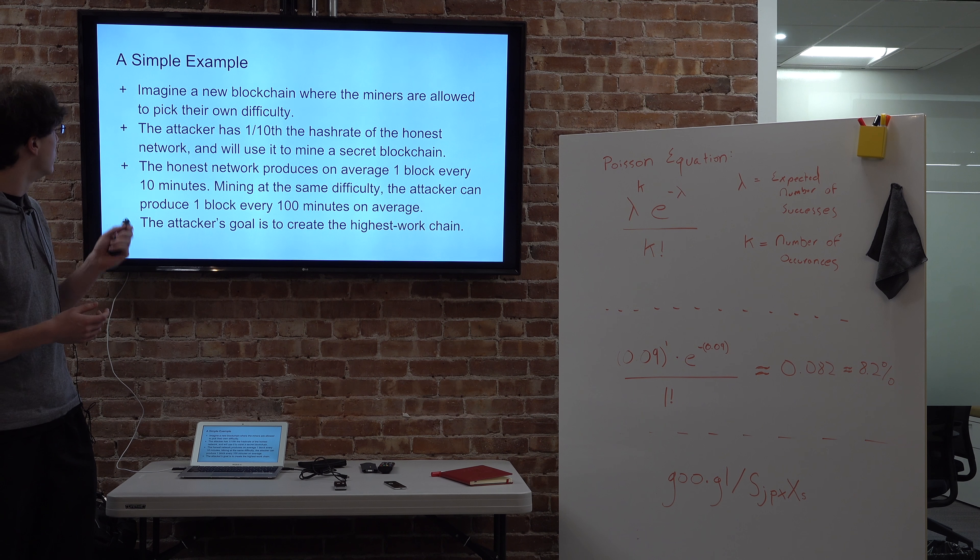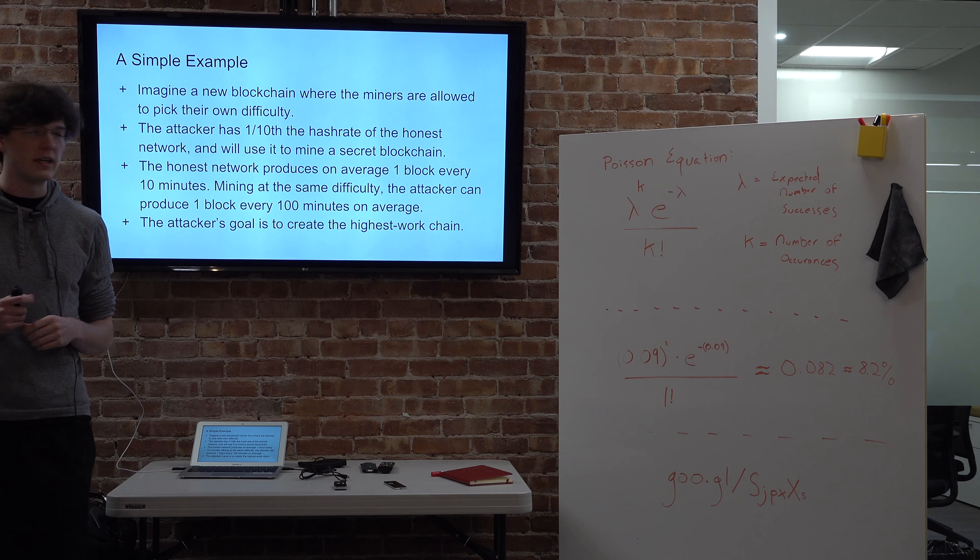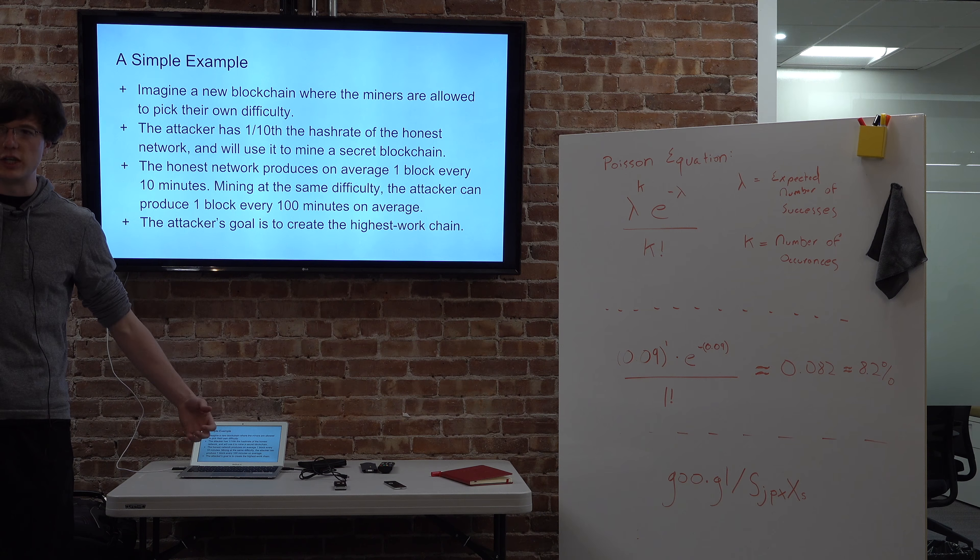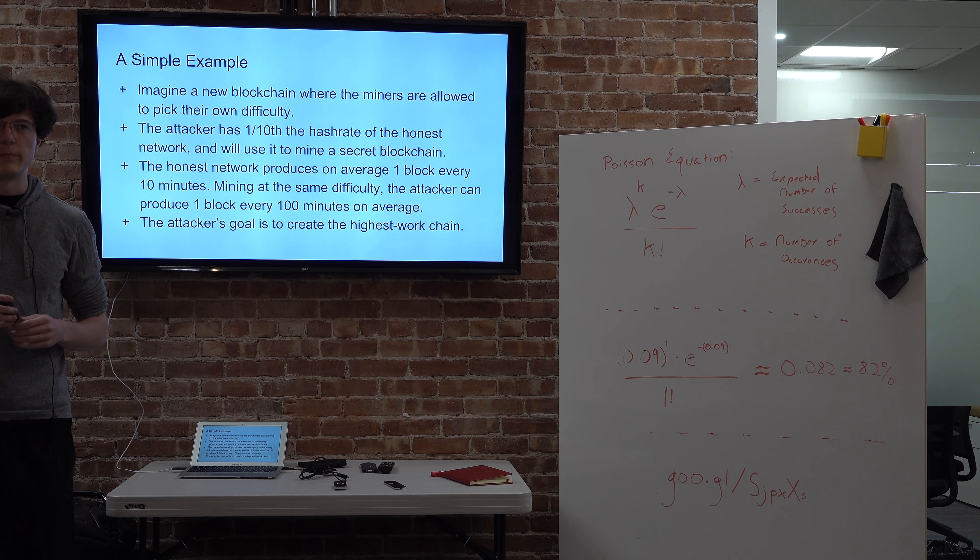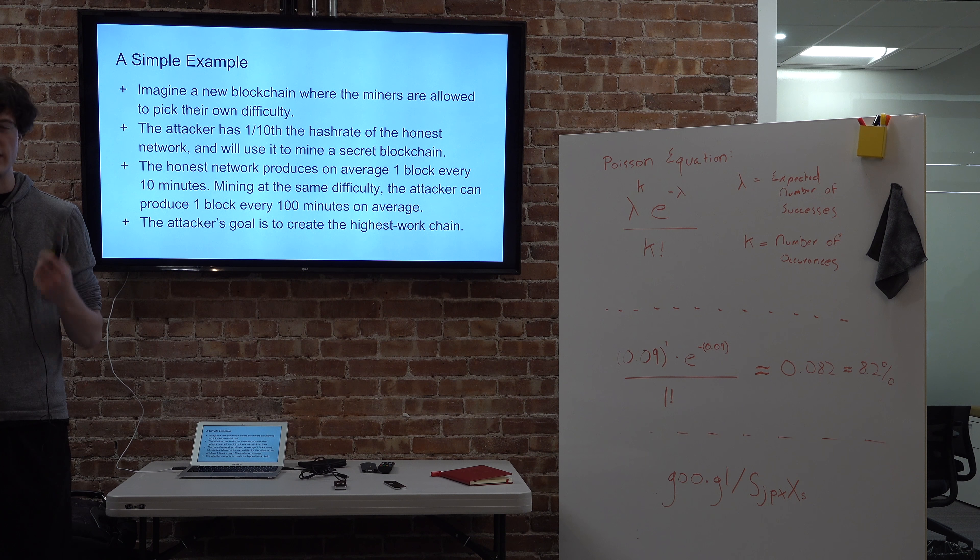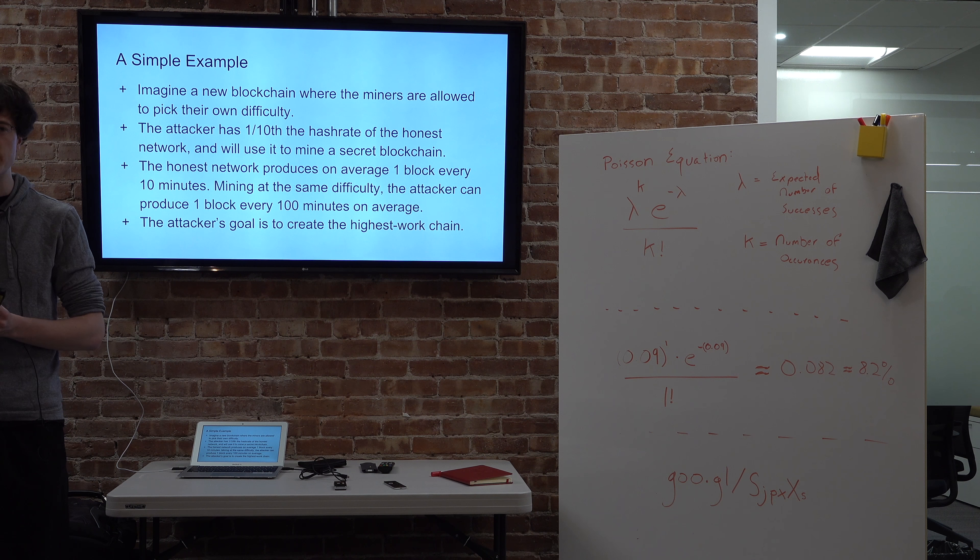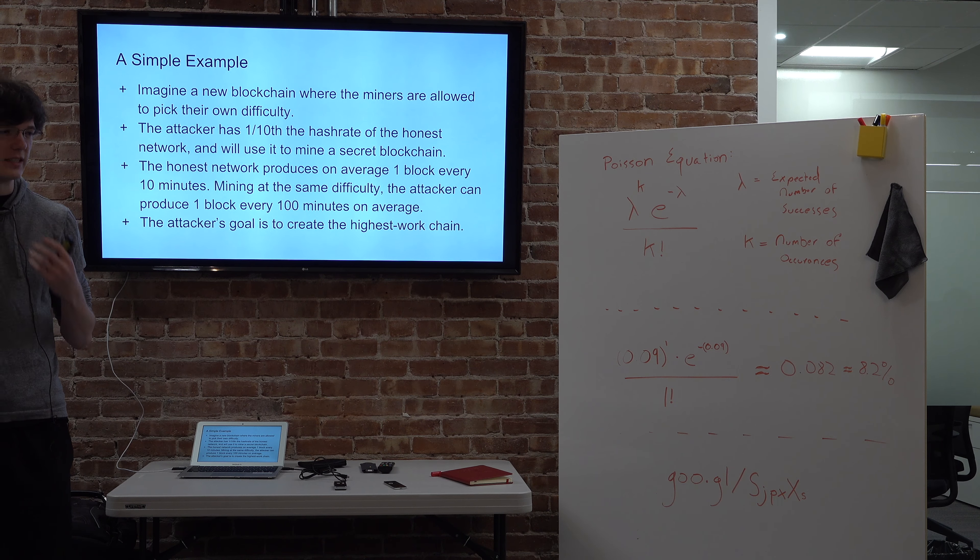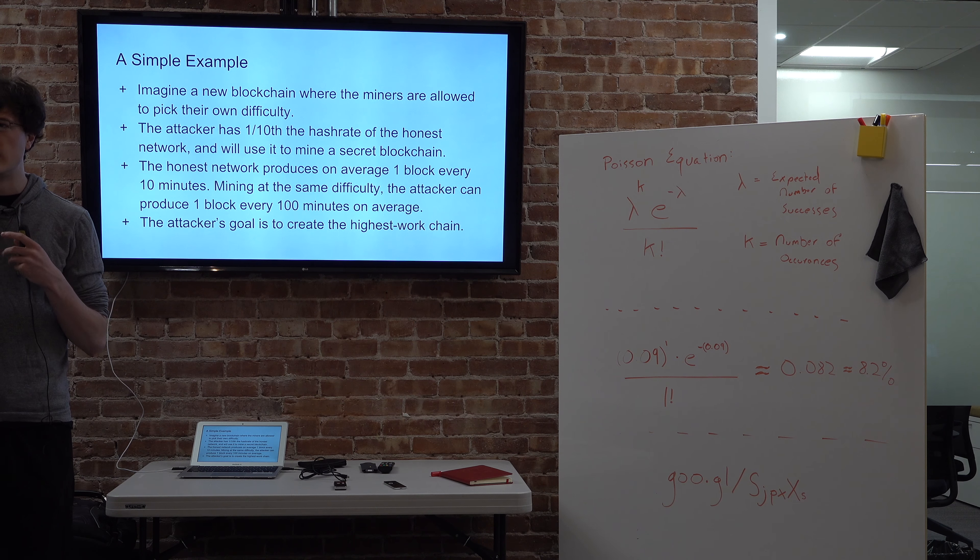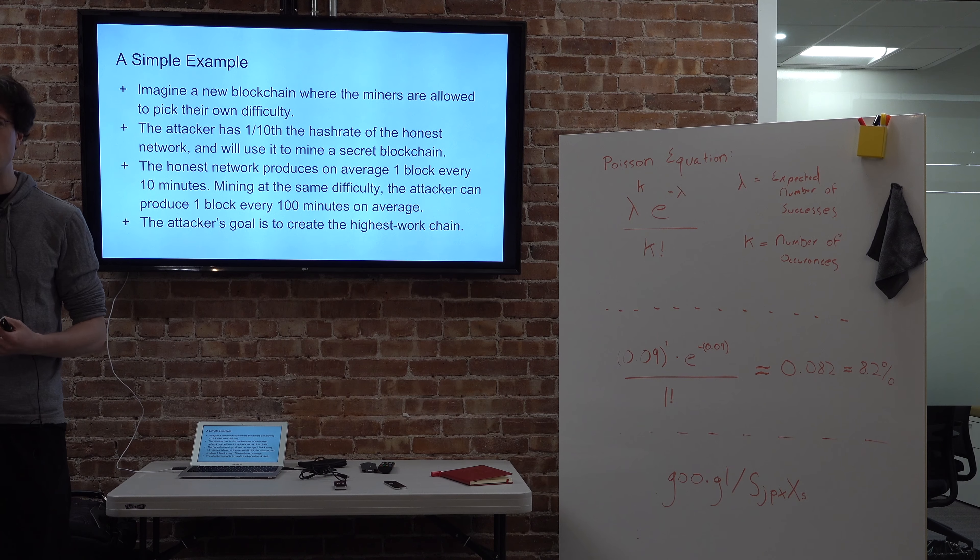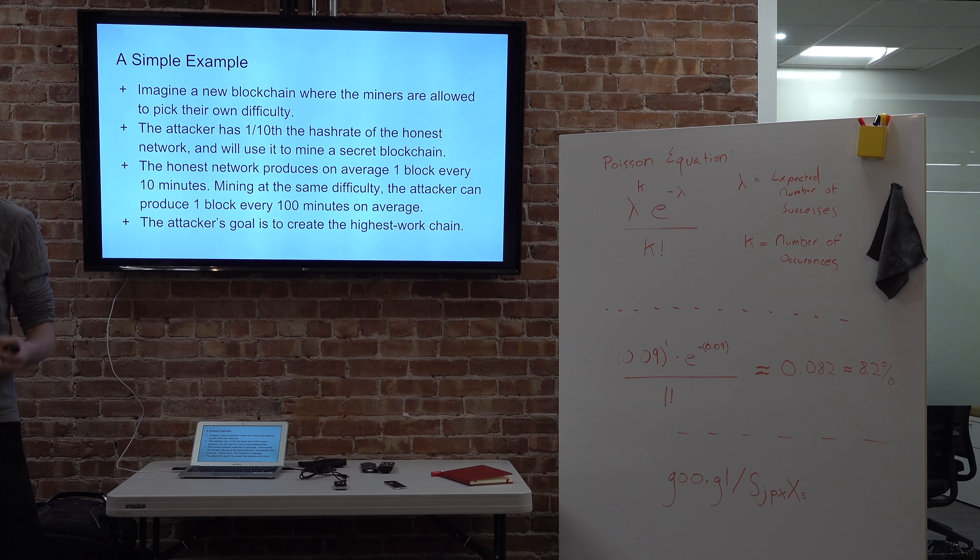The goal is we're an attacker. Our goal is to make a chain that is the longest chain, and we don't have enough hash rate. We don't have 51% of the hash rate, we're at a hash rate disadvantage. But my claim is that we can still make the longest chain with probability 1. So we have a guaranteed shot at making the chain with the most work.